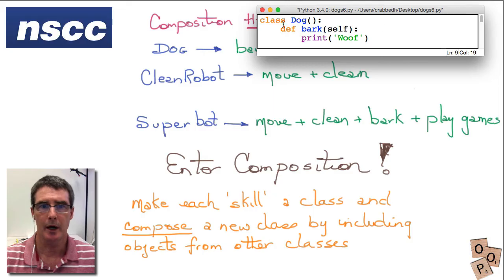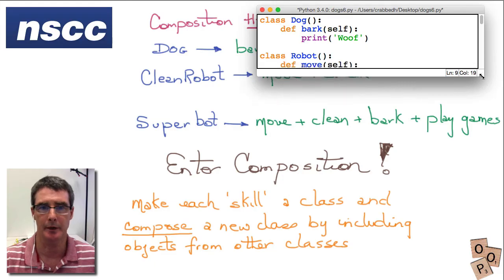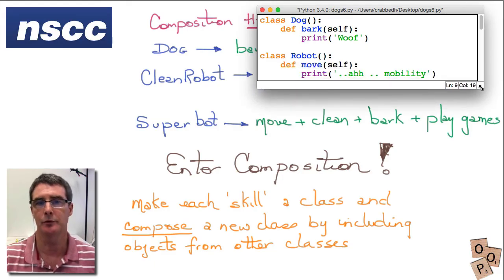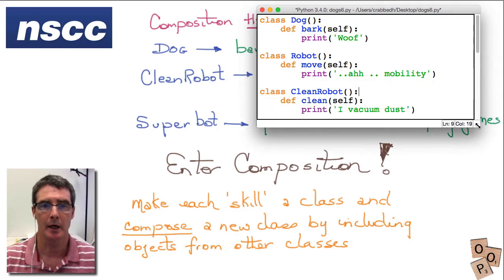Well I start by making very simple classes with these characteristics. So bark is in a class of dog and it can woof. And I'm not creating all the classes here just the ones that will create our super bot here. We've got a robot that can move. So we've defined the move method inside the robot class. We've got our clean robot and it's got the clean method. Now you'll notice that none of these are using inheritance. There's nothing in here that shows they're inherited from anything else.